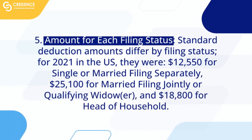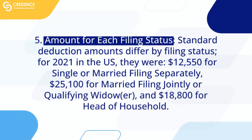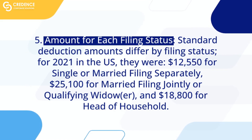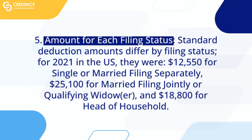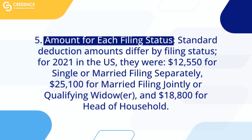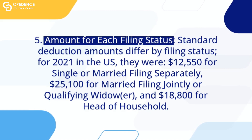5. Amount for Each Filing Status. Standard Deduction amounts differ by filing status. For 2021 in the U.S., they were $12,550 for single or married filing separately, $25,100 for married filing jointly or qualifying widow(er), and $18,800 for head of household.